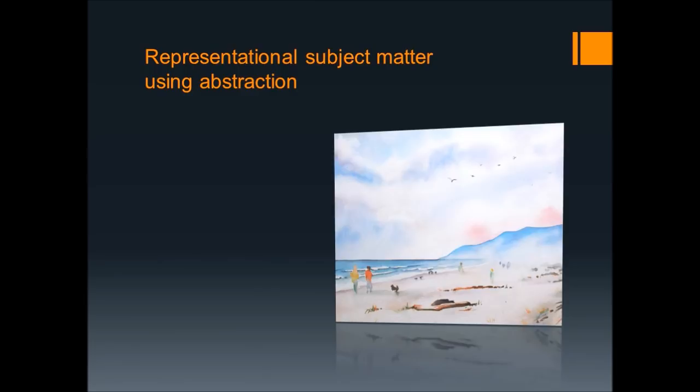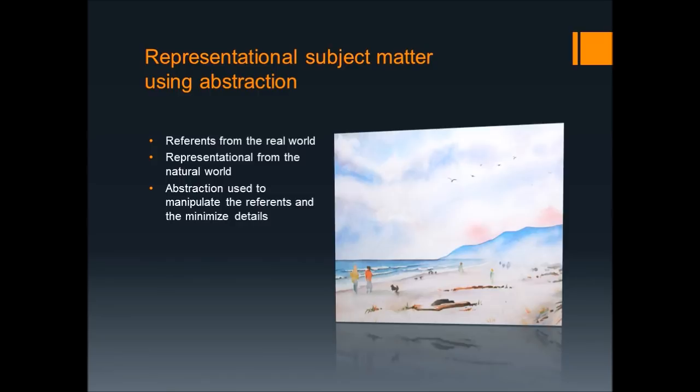You may find that sometimes the subject matter of a work of art seems to be somewhere between abstraction and representation. In that case, you simply need to describe how abstraction is used. In this painting, the referents are recognizable — the ocean, the people, the dog, the hills. I have used abstraction to minimize details in the figures; in fact, everything has received this treatment, so that the scene has a soft appearance. The subject matter is representational from the natural world, but abstraction has been used to manipulate the referent and minimize the details.